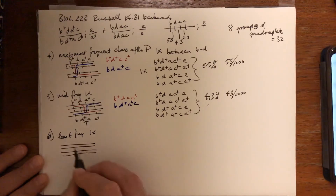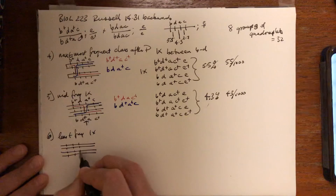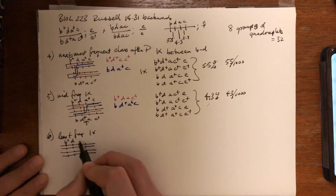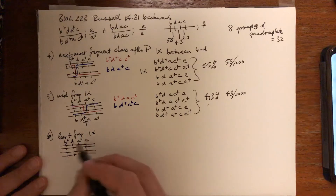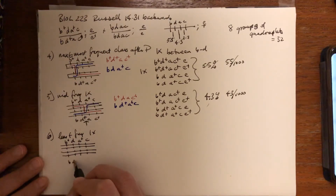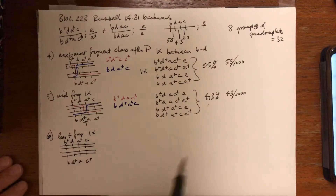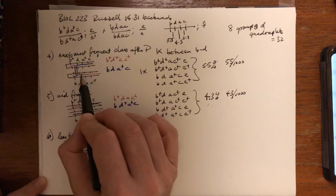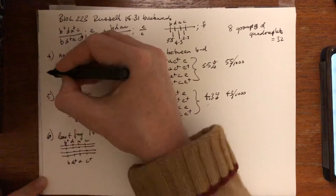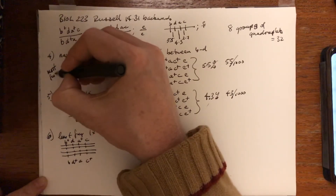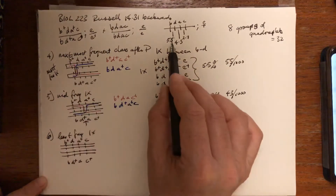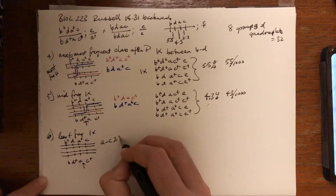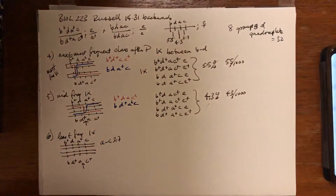We will draw the four-strand stage of the linkage group with B+ D, A+ C from one of the female parents, and B, D+ A, C+. This is the four-strand stage. Because we've already calculated the most frequent single crossing over between B and D at 5.5 map units, and the mid at 4.3, it's going to be between A and C at 2.7 map units.